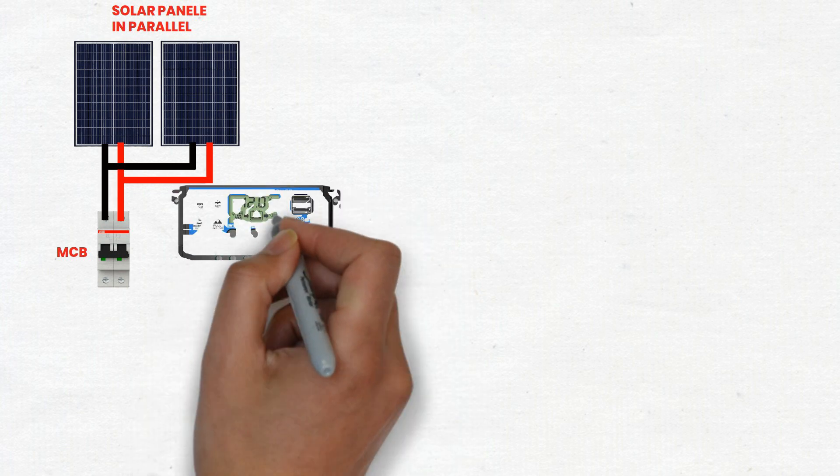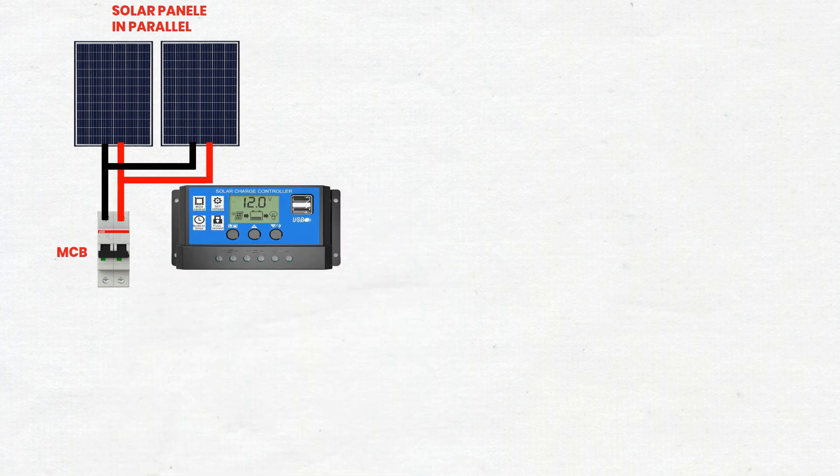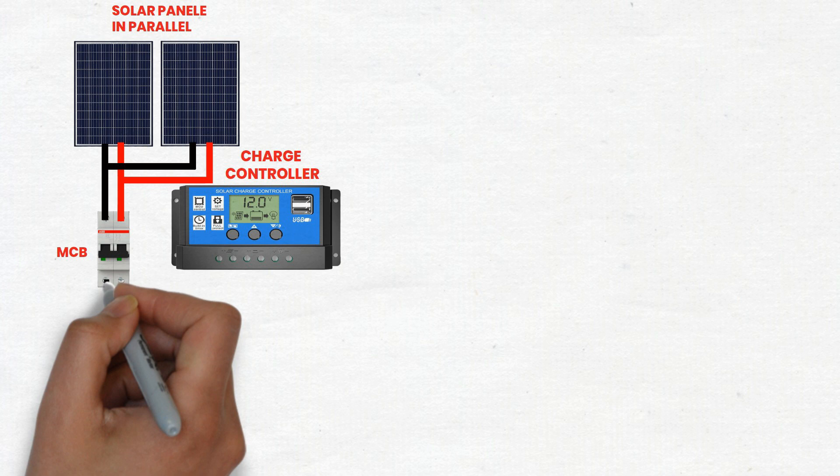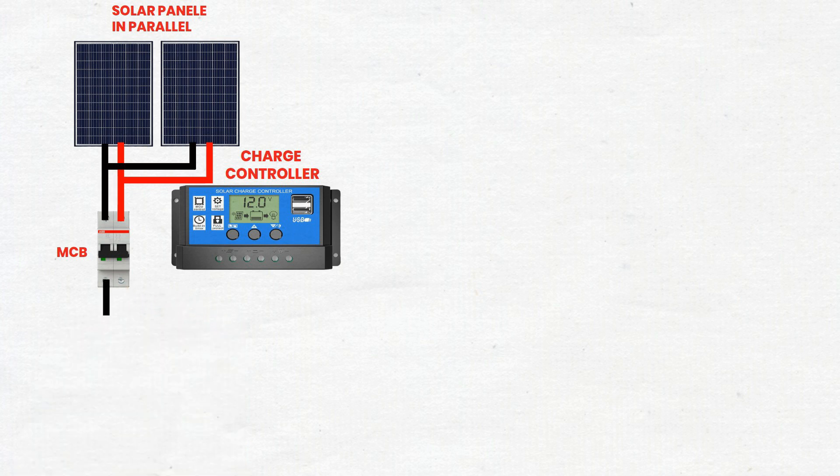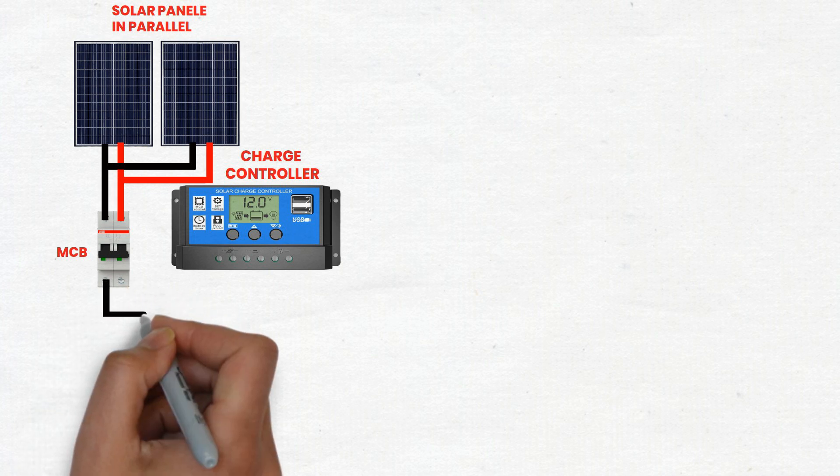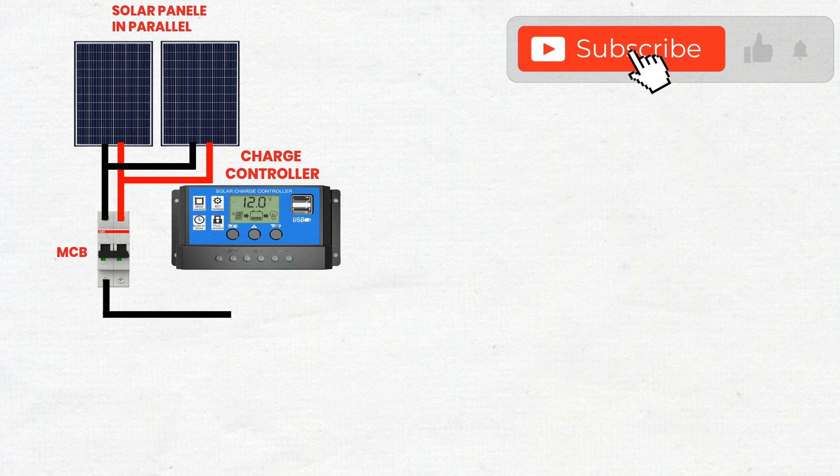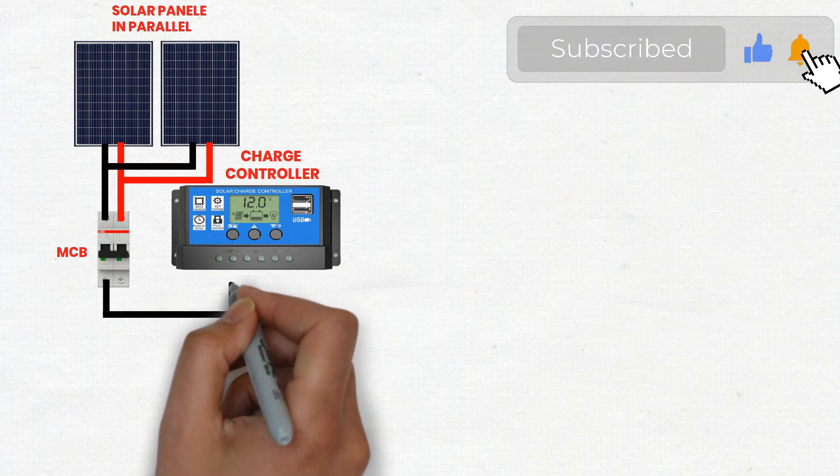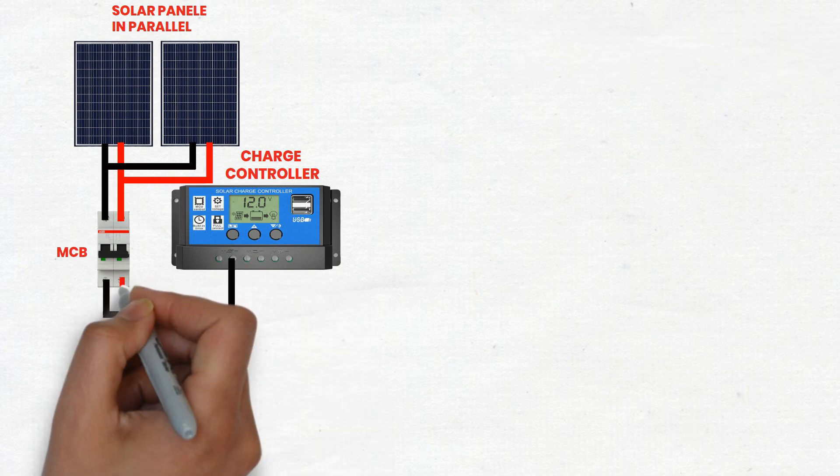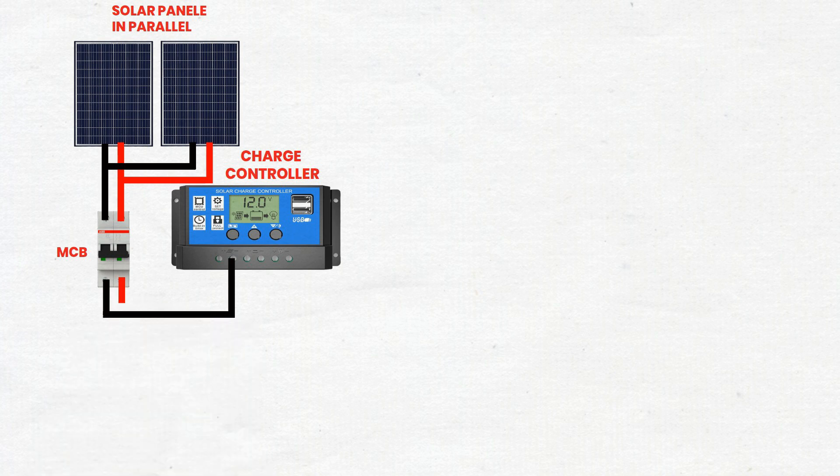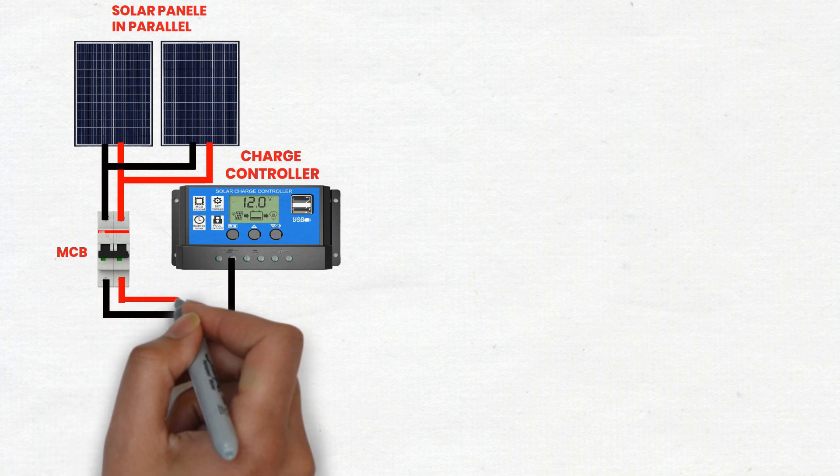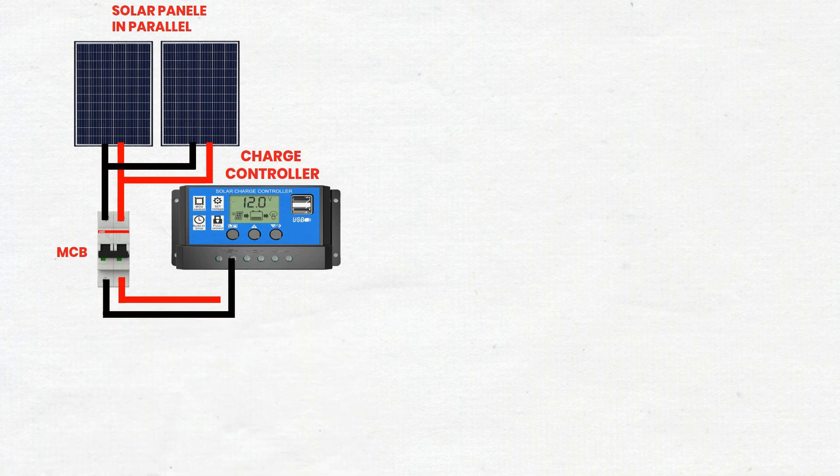Step 2: Connect first MCB to solar charge regulator. Run cables from the output of the first MCB to the input terminals of the solar charge regulator. Ensure correct polarity, positive to positive, negative to negative. The solar charge regulator or controller regulates the voltage and current coming from the solar panels to protect the batteries from overcharging and deep discharging.